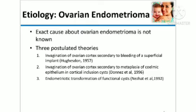Endometriosis is a three-postered theory. Invasion of the ovarian cortex secondary to bleeding of superficial implants, invasion of ovarian cortex secondary to metaplasia of the serum epithelium, ovarian cortex invasion due to bleeding in the pharma, and ovarian cortex metaplasia of the serum within the pharma.